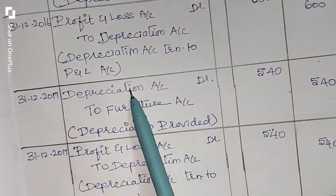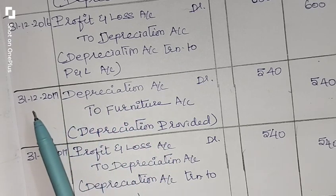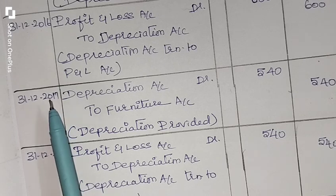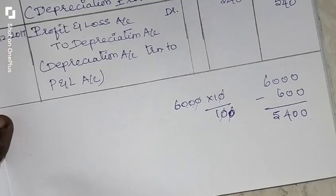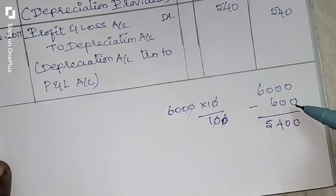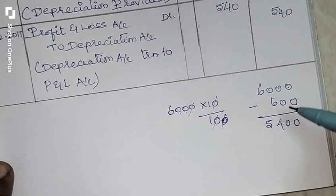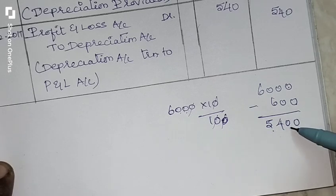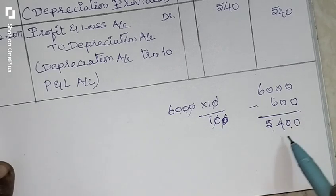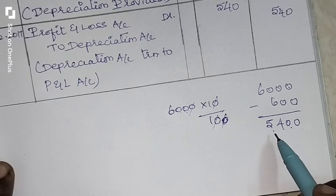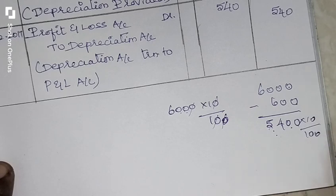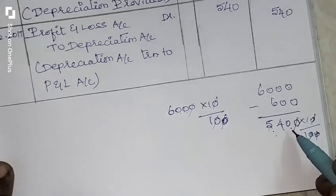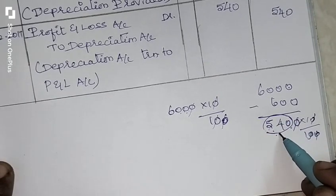Now let's take the second year depreciation journal entry, dated 31st December 2017: Depreciation Account debit to Furniture Account, Rs. 540 — depreciation provided. For the second year, we subtract the first year depreciation of Rs. 600 from the original cost of Rs. 6,000, giving a diminishing balance of Rs. 5,400. We then calculate 10% of Rs. 5,400, which gives Rs. 540 — the second year depreciation.